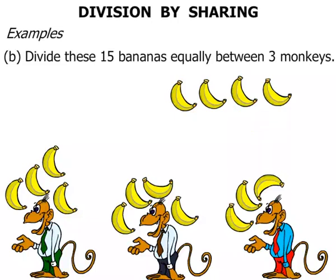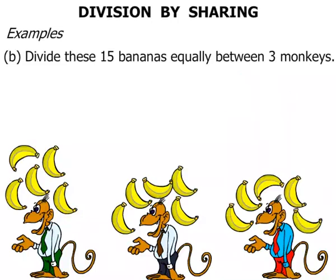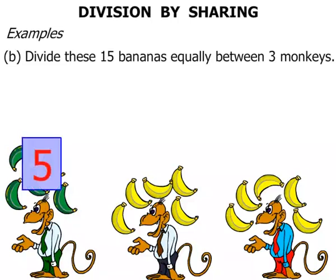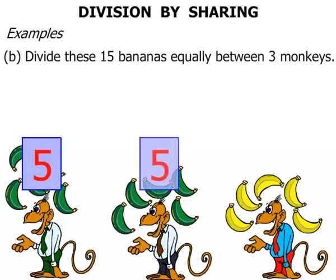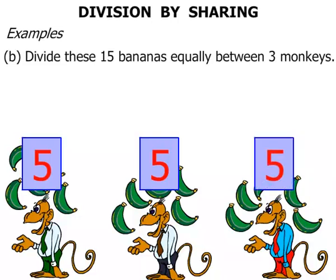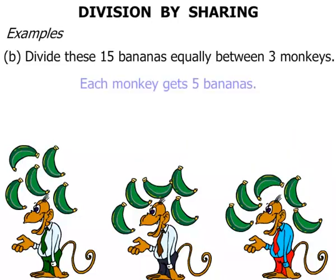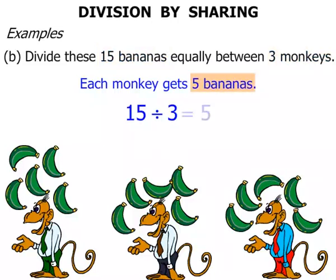And we're just about done. Once we've finished, let's count the bananas for each monkey: 1, 2, 3, 4, 5 — so 5 bananas there. Again, 1, 2, 3, 4, 5 — 5 bananas. And 1, 2, 3, 4, 5 — 5 bananas there. So each monkey gets 5 bananas. We had 15 bananas split up between 3 monkeys — we can write that as 15 divided by 3, and the answer equals 5.